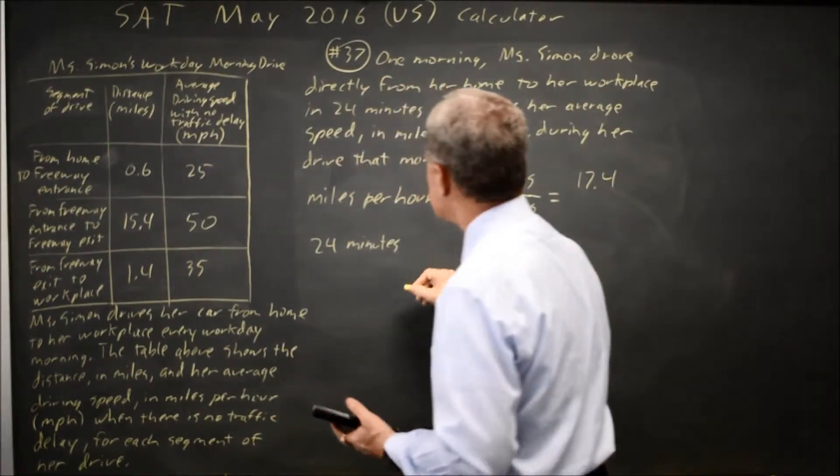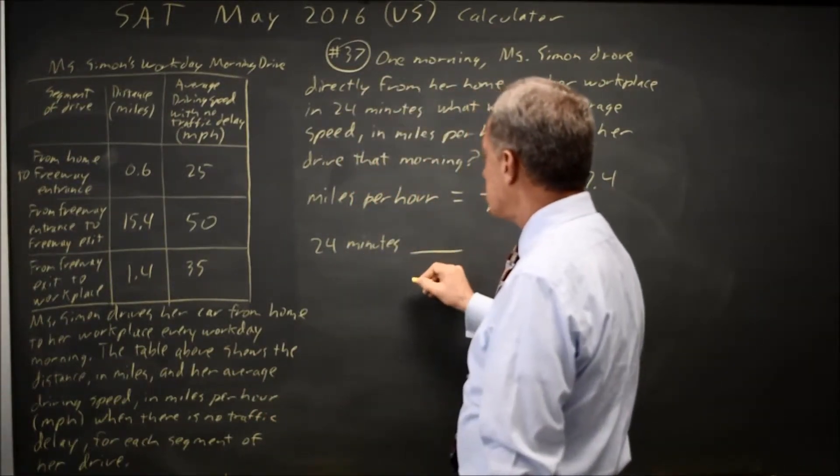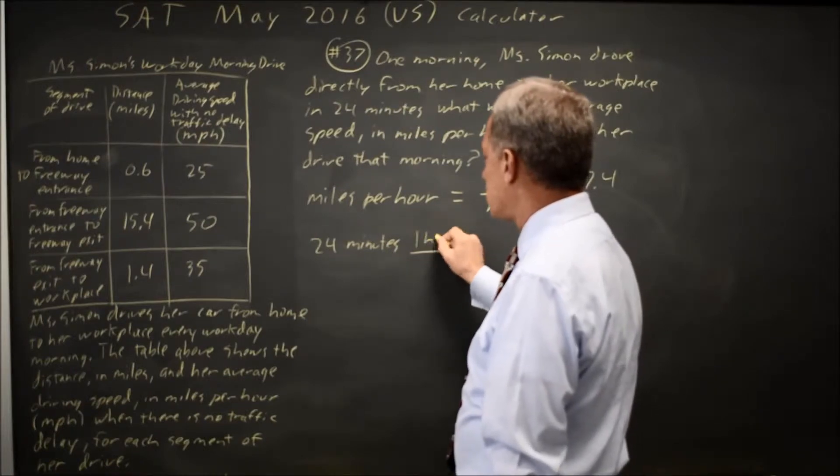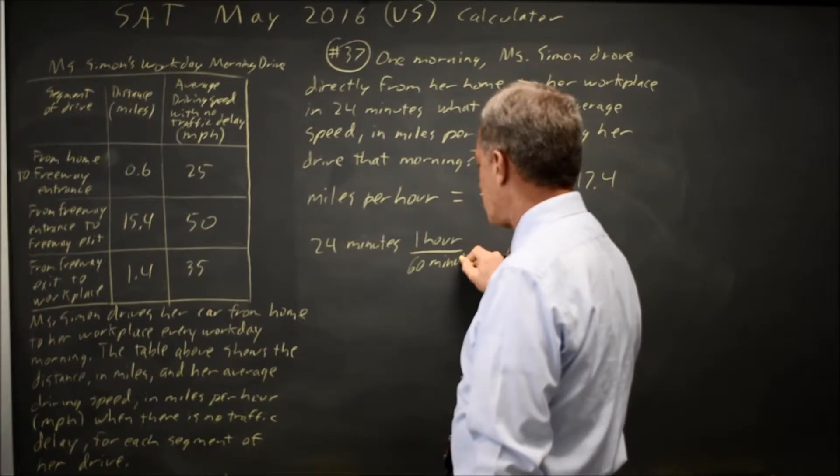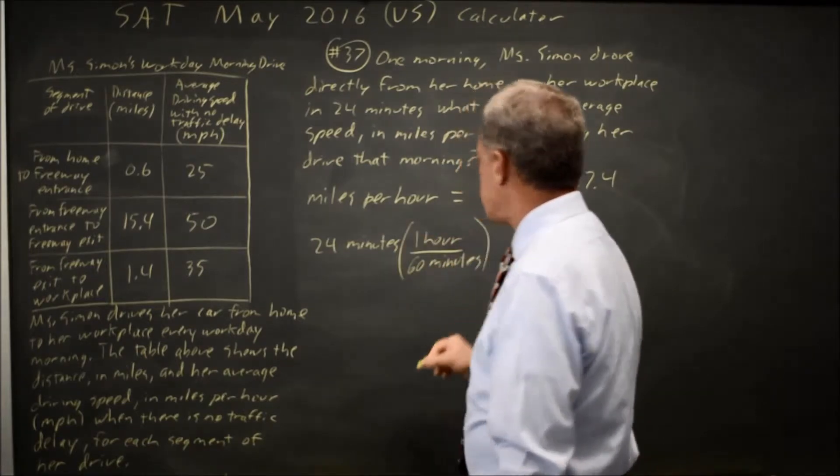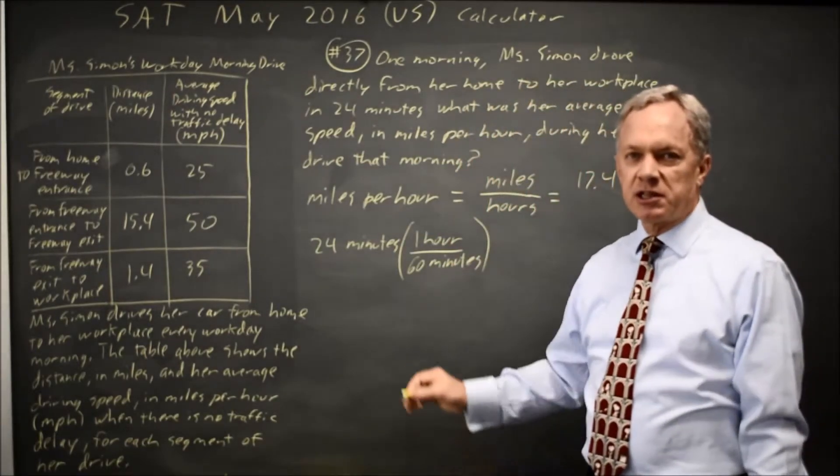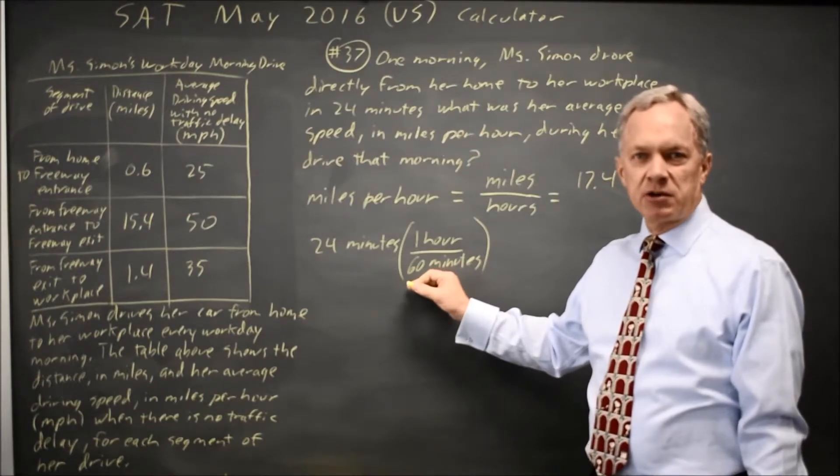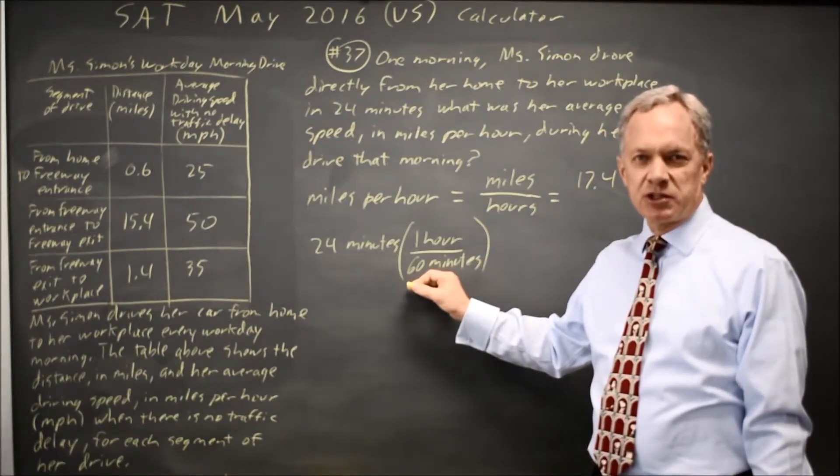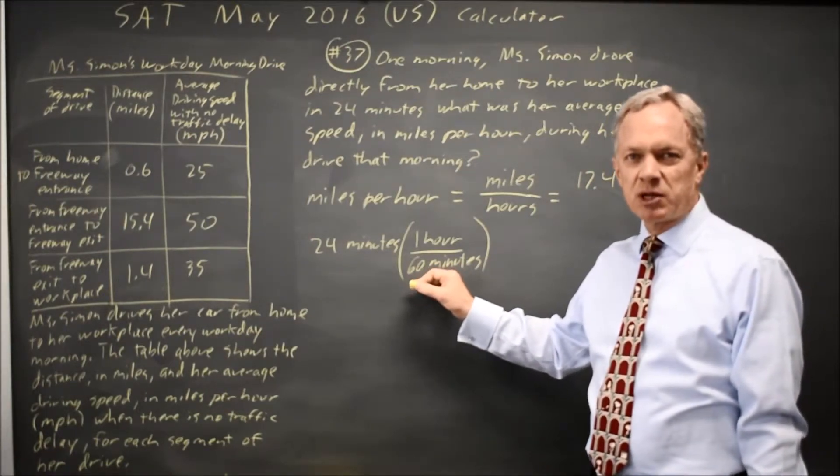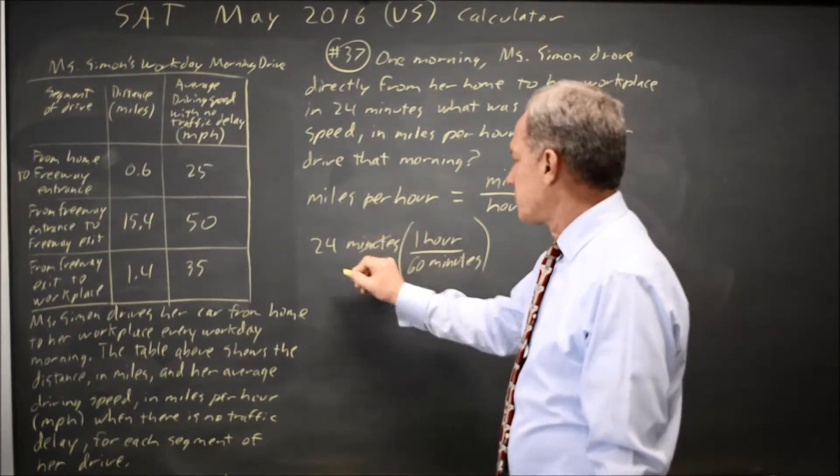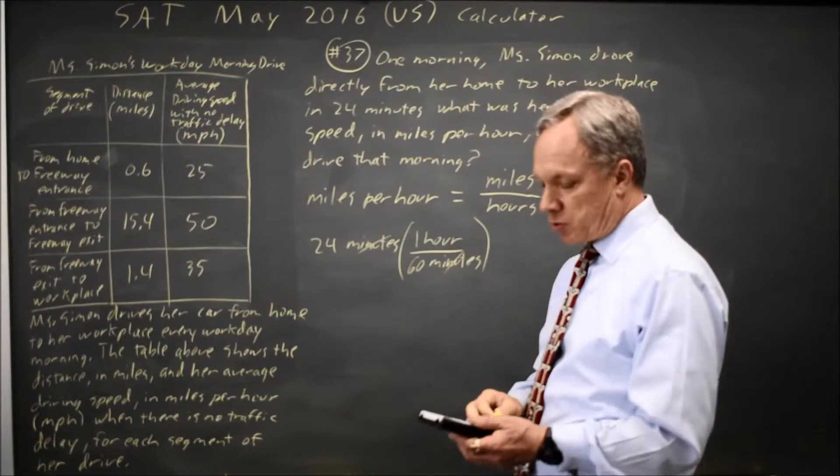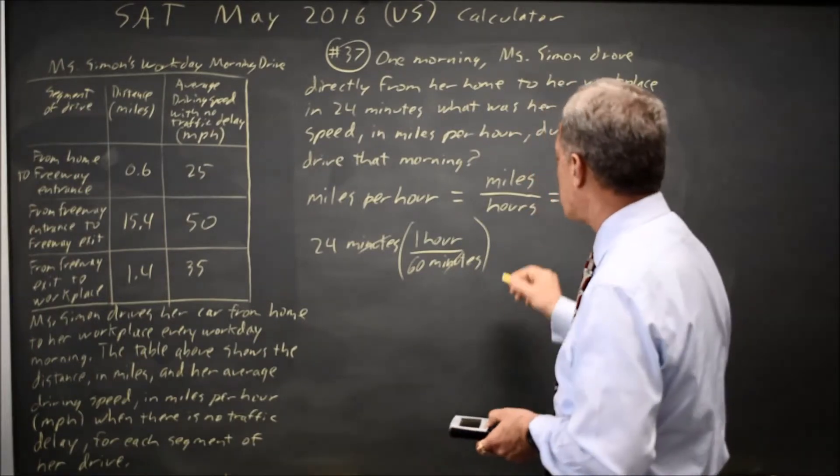To convert to hours, I'm going to remember that 1 hour is 60 minutes. I like to convert units by multiplying by a fraction that's equal to 1, and since 1 hour is equal to 60 minutes, 1 hour over 60 minutes is 1, and multiplying by 1 doesn't change the value of an expression. I put the minutes in the denominator because now minutes cancel, and I have 24 over 60 is 0.4 hours.